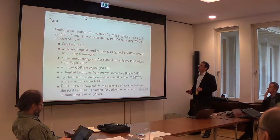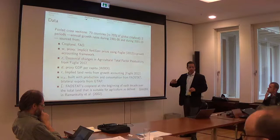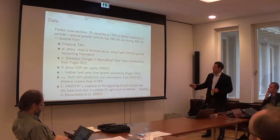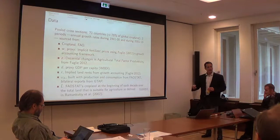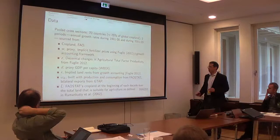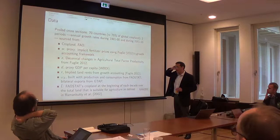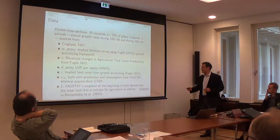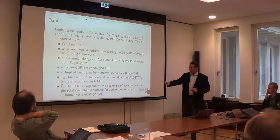Cropland comes from FAO. The non-land input prices are proxied by implicit fertilizer prices using Fuglie's 2012 growth accounting framework. We can talk about that later. I'm going to skip over the details. But this same growth accounting framework is used by Fuglie to produce the changes in TFP growth. So that's the data we are using there.